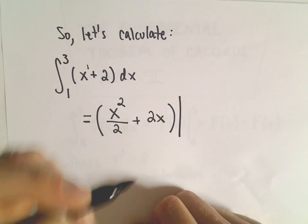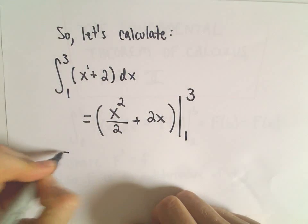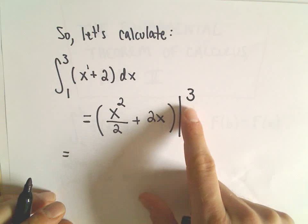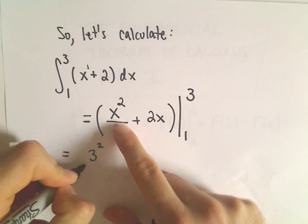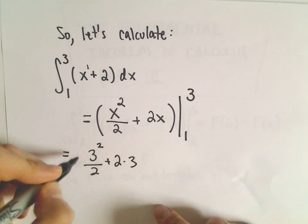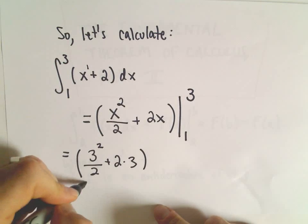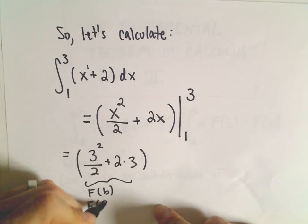And what I'm going to do now, since we found an antiderivative, I'm just going to write from 1 to 3. And what I'm going to do now is simply everywhere there's an x, I'm going to plug in a 3. So I'm going to have 3 squared over 2 plus 2 times 3. So this is like my f of b part, or in this case, it's going to be f of 3.